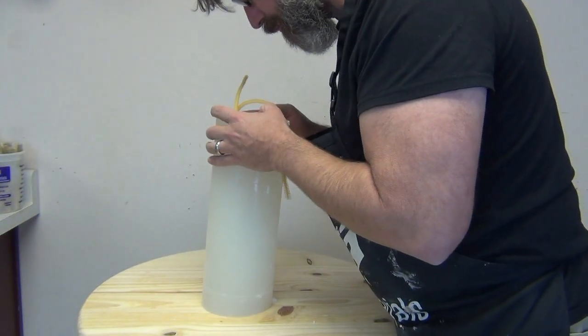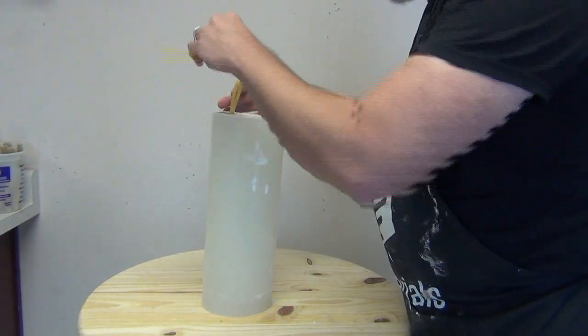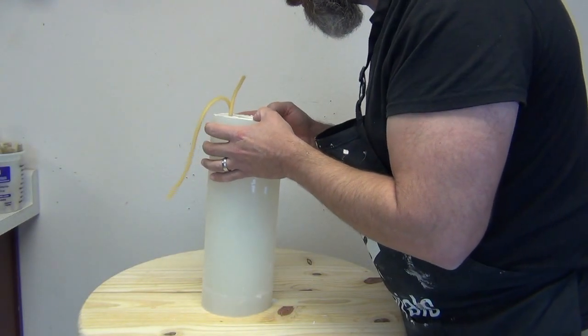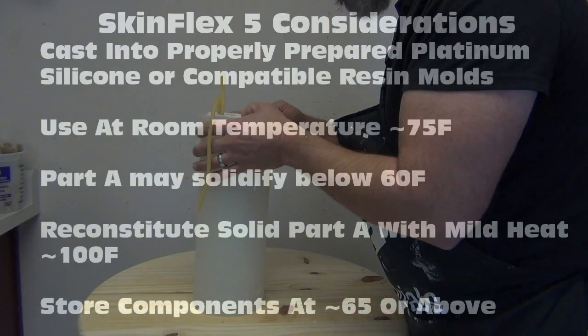Once everything is in place, we are now ready to pour our SkinFlex rubber. That was one of the neat things I discovered with the SkinFlex. Playing around with it was that it actually had much higher clarity than I expected. Because typically some of the translucent silicones that I use, sometimes those are more of a cloudy, milky white.